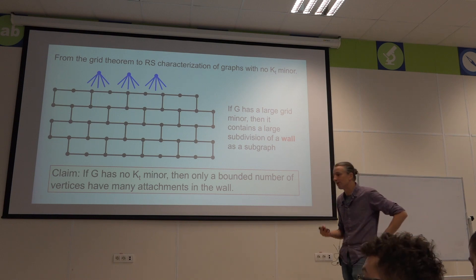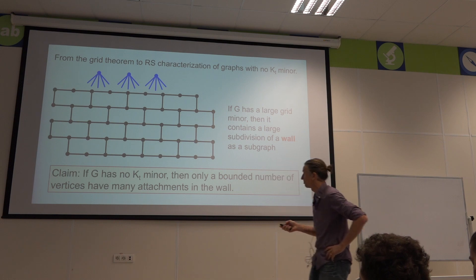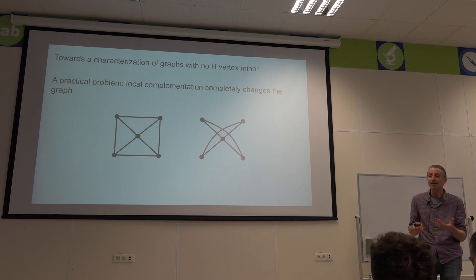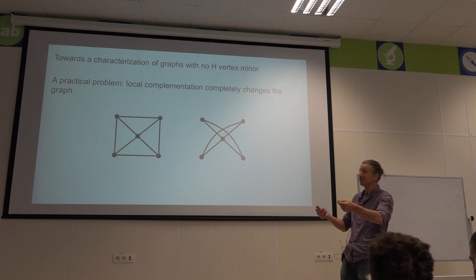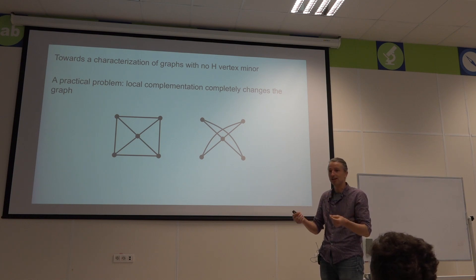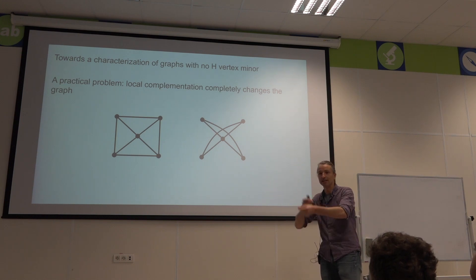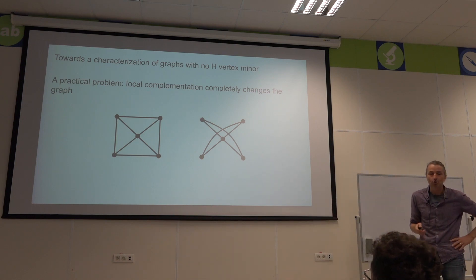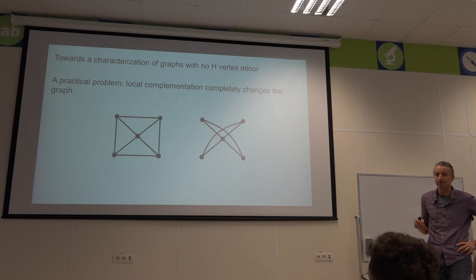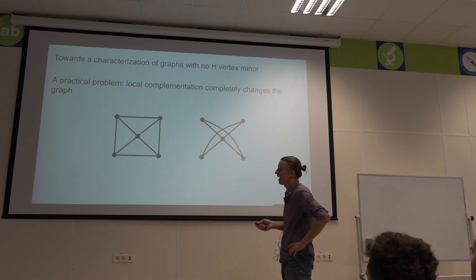This intuition — squinting your eyes and seeing the minor — completely falls apart when we go to vertex minors, because of local complementation. If I give you a big graph and say complement this vertex, then do another local complementation somewhere else, you start trying to track all the edge changes and everything falls apart. Local complementation completely changes the graph at each step, so you lose this intuitive way of seeing the structure.